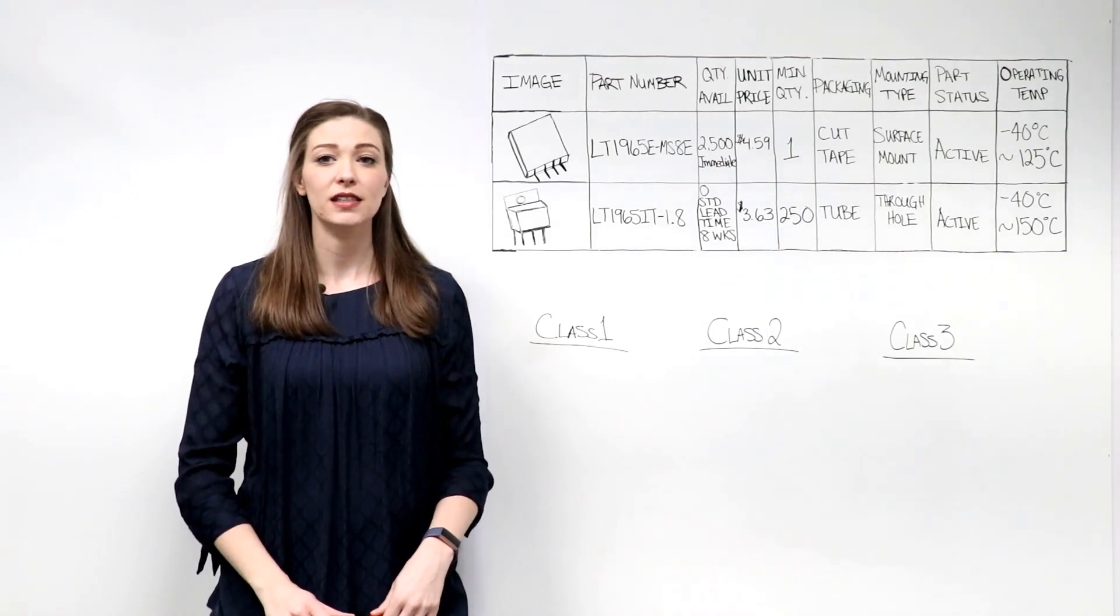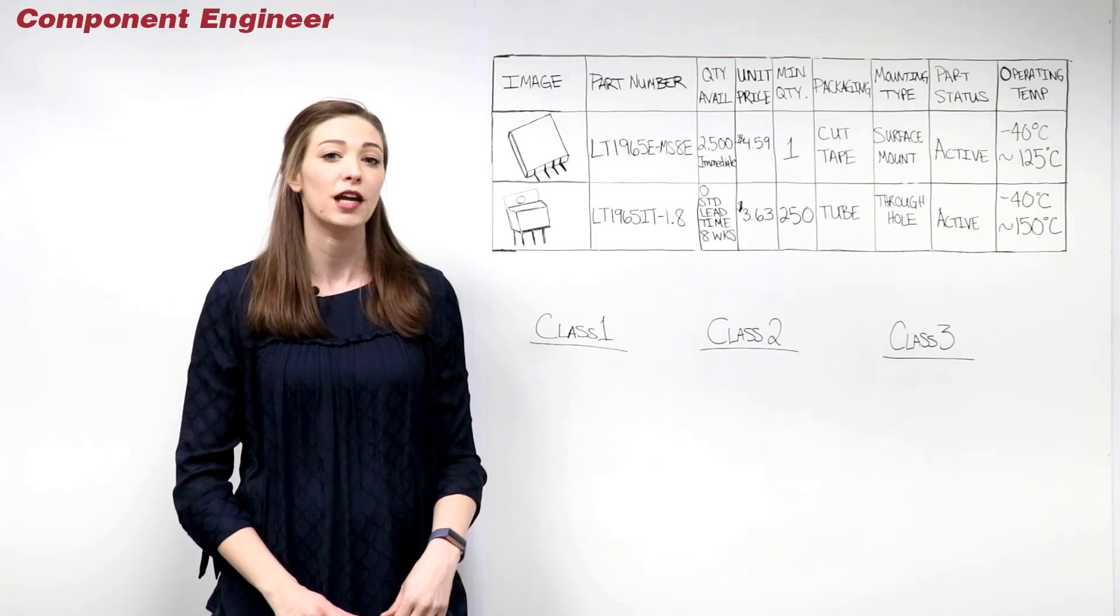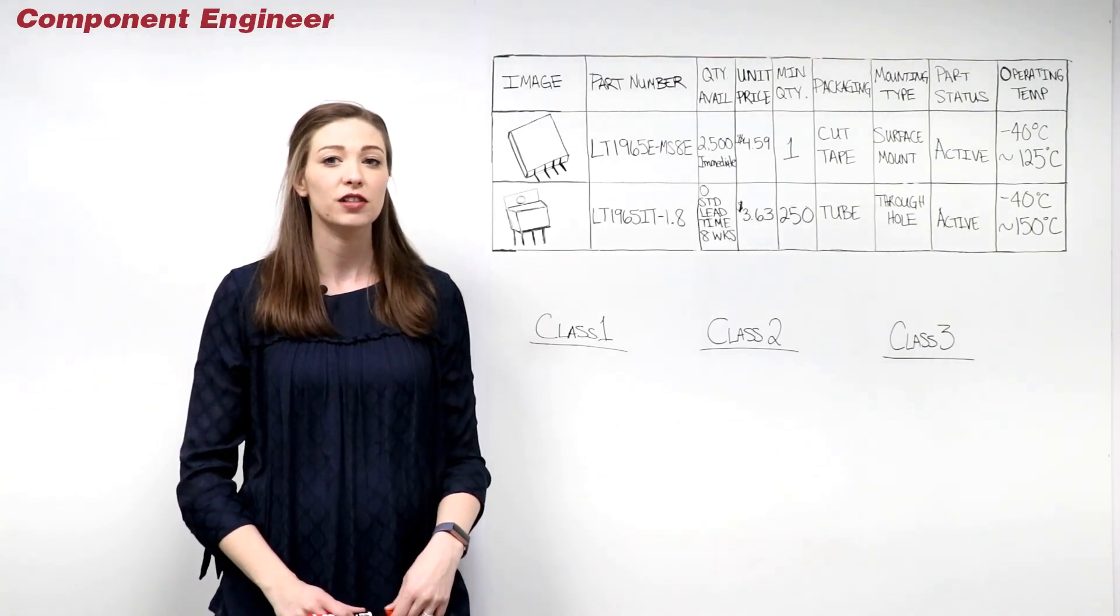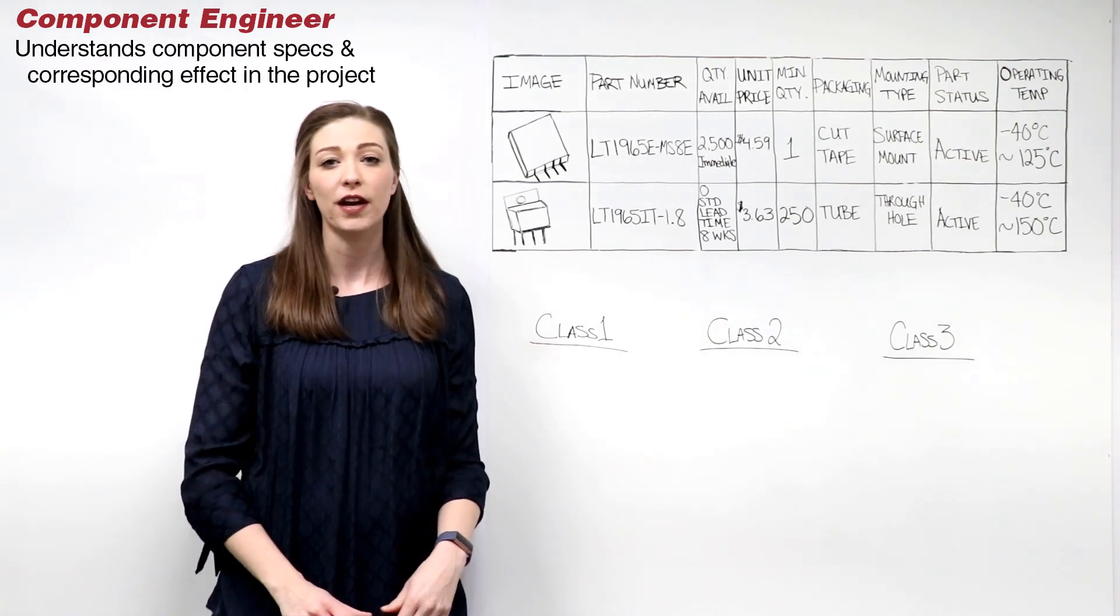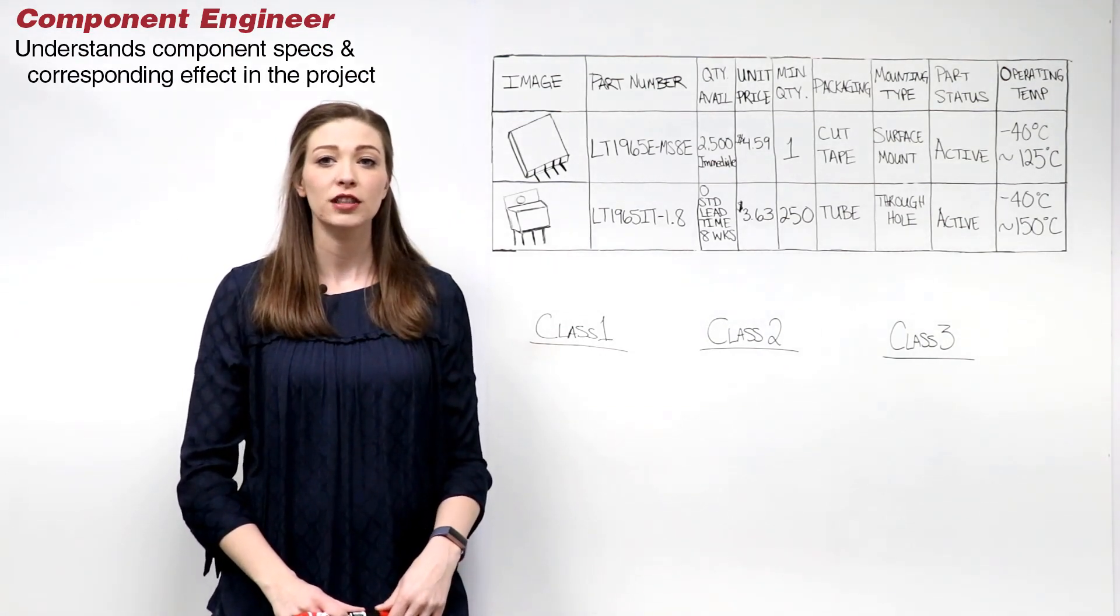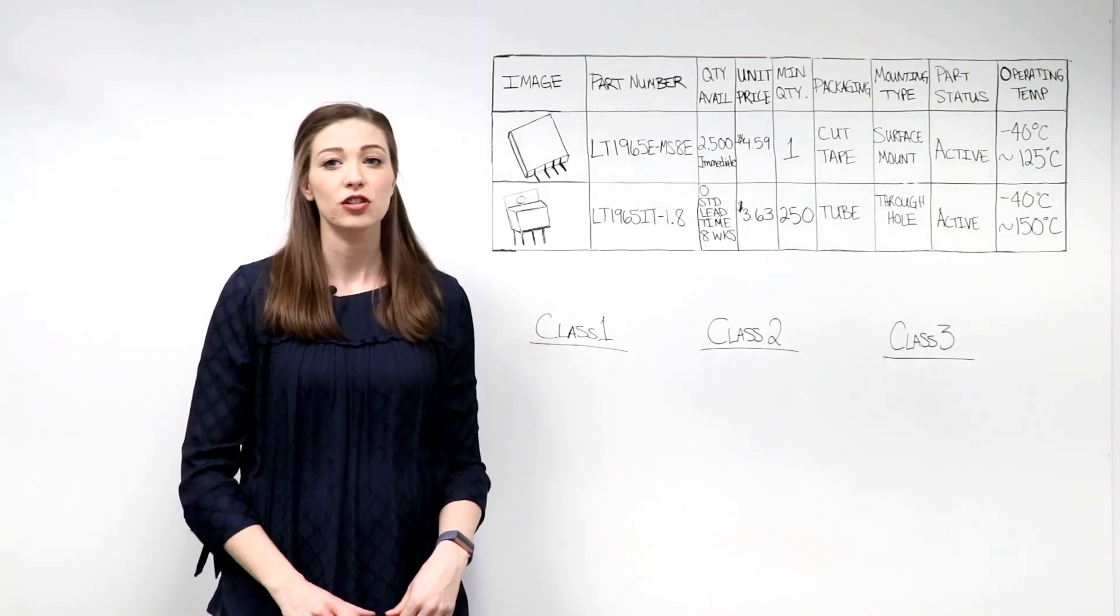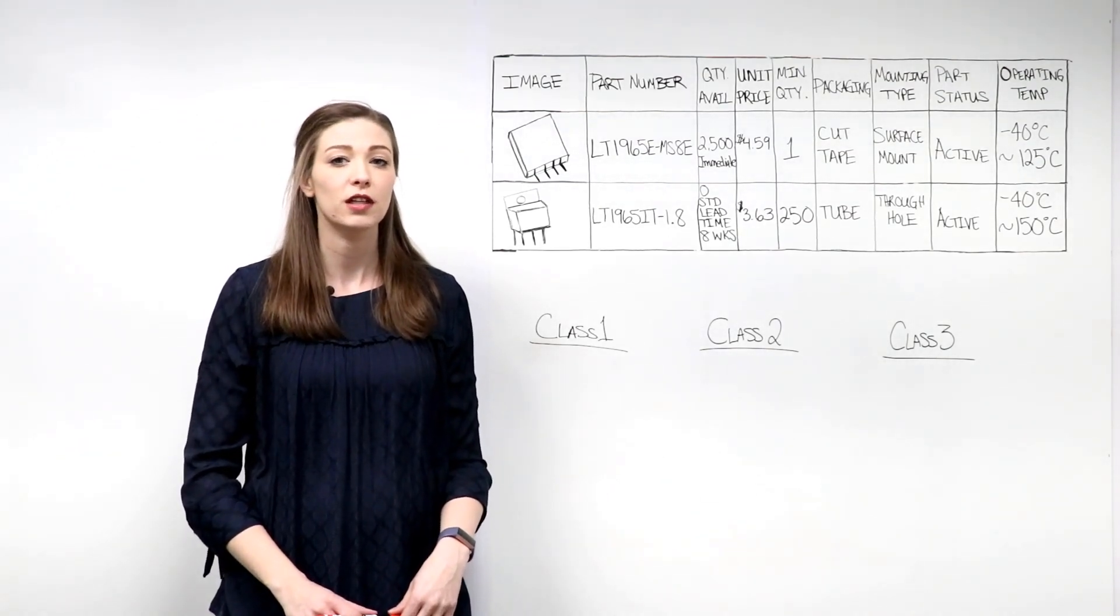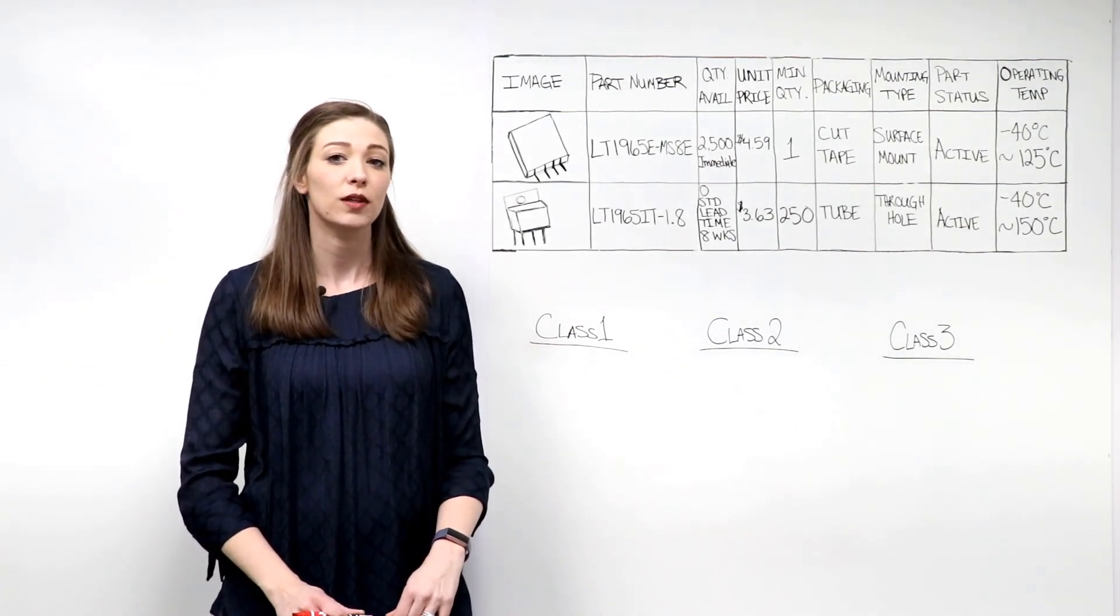In the past and still in some larger companies, component selection was completed by a component engineer, a designated person in the company who understands all specifications of a part and their effect in a project. However, in today's world, many engineers do not have this luxury. As positions are consolidated, this responsibility falls on the electrical engineer. So what factors need to be considered when choosing a part?